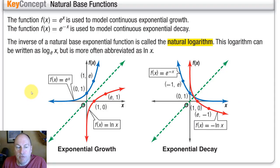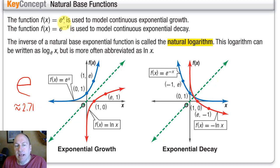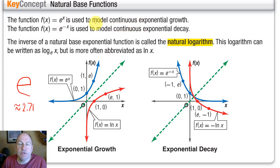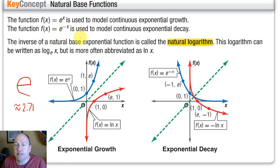We're going to look at this special number called Euler's number, which is e, approximately 2.71. E is used for many things, but one of its most important uses is in a function that models continuous exponential growth or decay, which is important for many applications. The function f(x) = e^x is used for growth, and f(x) = e^(-x) is used for continuous decay.